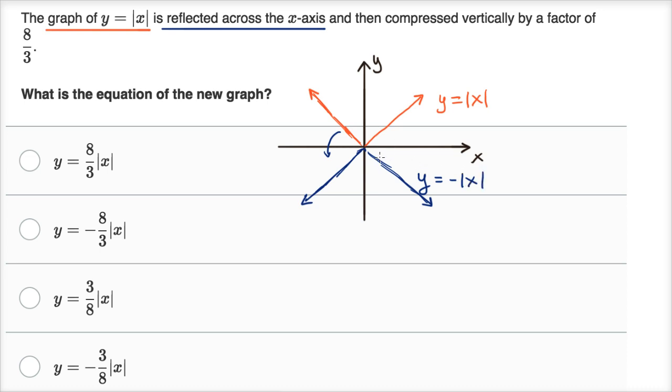And if this doesn't make intuitive sense to you, try it out. In the orange graph, when x is equal to, let's say, two, well the absolute value of two is two. The absolute value of negative two is two.